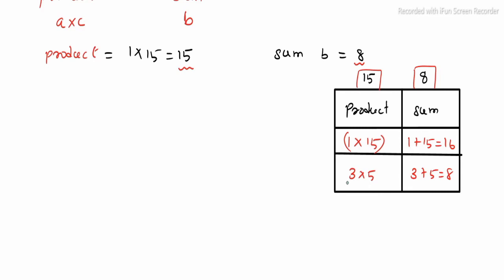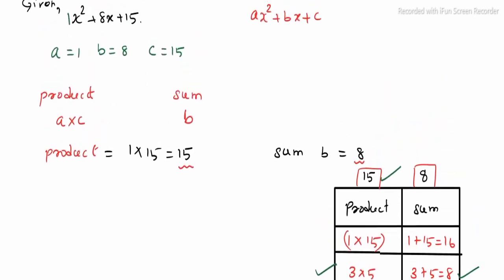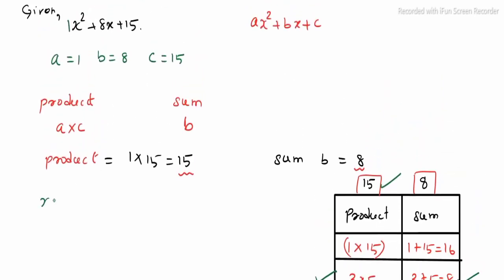Now these two are the same value. 3 and 5 are 15, 3 plus 5 is 8. That's why we choose this term. Anyway, one second, we will copy the question. x square plus 8x plus 15.